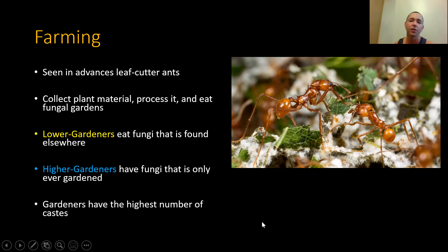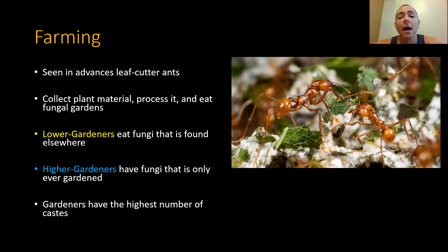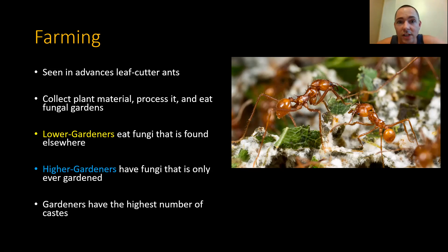Gardeners also have the highest level of caste complexity — they'll have 9, 12, or even 20 different castes, versus most species of ants that have one worker caste plus the queen. Maybe 10% of ant species have majors and minors — two morphological castes in the workforce plus queens and drones. But these gardeners can have a dozen different morphological castes within their society. They reach large sizes, practice domestication, live in huge long-lived groups, and have many specialized sub-castes within their workforce.